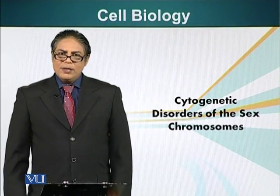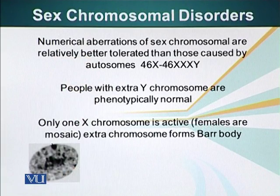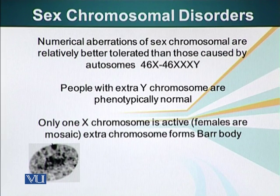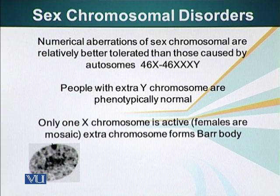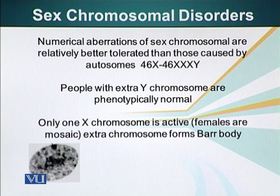In this module, we will talk about cytogenetic disorders involving sex chromosomes. First of all, let me define a few things. Numerical aberrations of sex chromosomes are relatively better tolerated than those caused by autosomes. For example, the normal number of chromosomes is 46XX or 46XY. Even people with 46X and 3X chromosomes and a Y chromosome are viable. This would not happen if we had two extra autosomes.